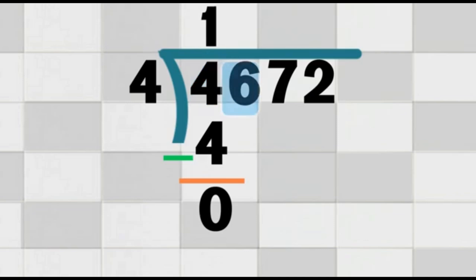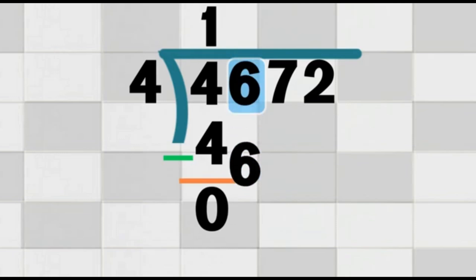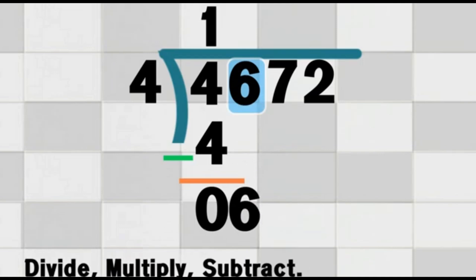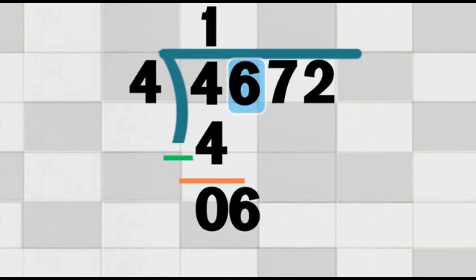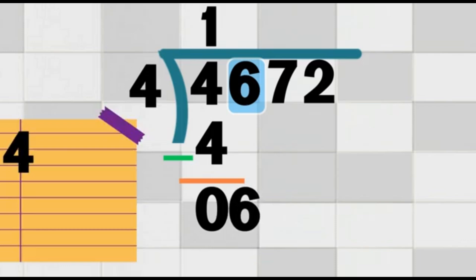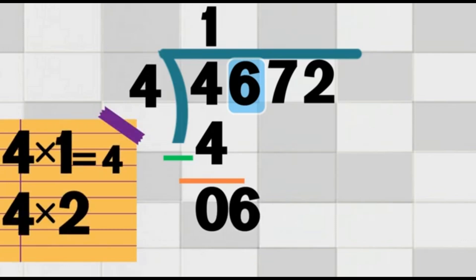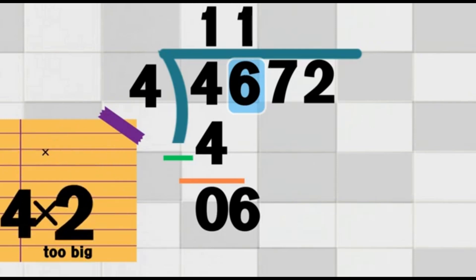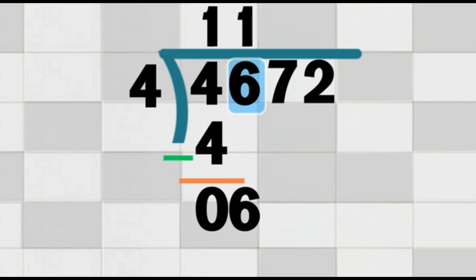Now, we bring down the next digit in the dividend. The next digit in 4,672 is 6. So, we bring down the 6 and now we are looking at the number 6. We repeat the same steps — divide, multiply, subtract. We ask: how many times does 4 go into 6? 4 goes into 6 one time, because 4 times 1 equals 4 and 4 times 2 equals 8, which is too big. So, we write 1 on top of the division bracket, above the 6. Now our answer on top is 11.